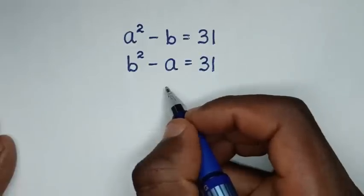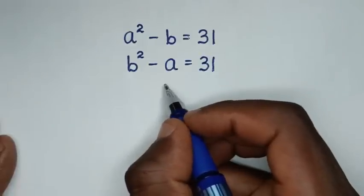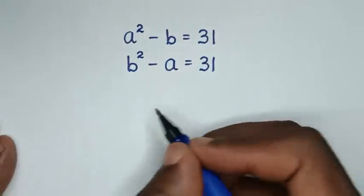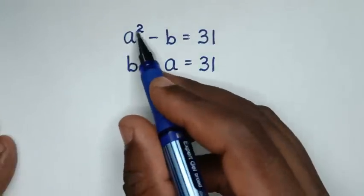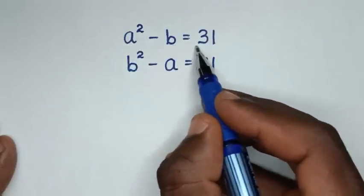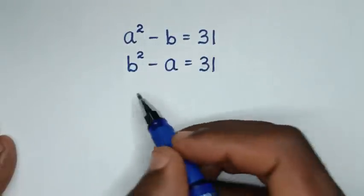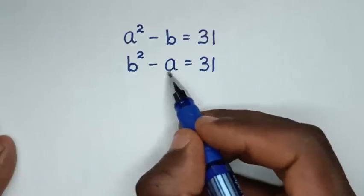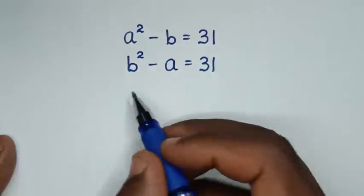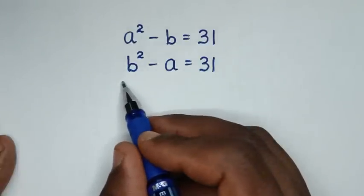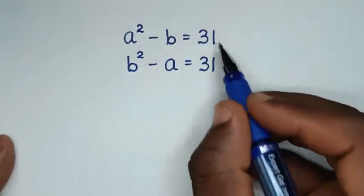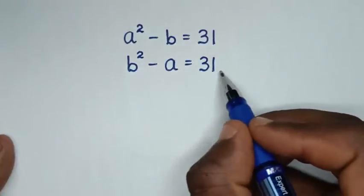Hello, you are welcome to solve this math problem: a squared minus b is equal to 31, and b squared minus a is equal to 31. We need to find the values of a and b from these two systems of equations.